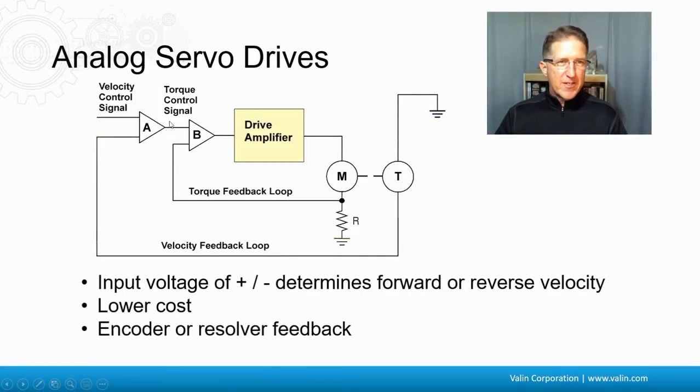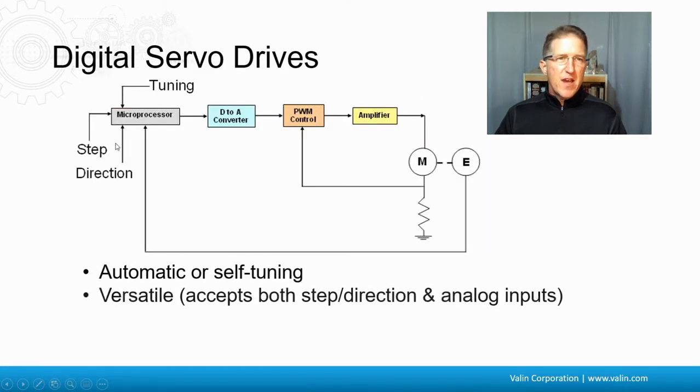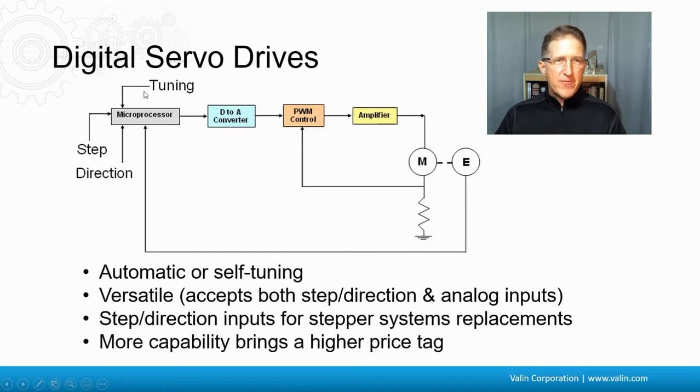Another couple quick things here. Here's an analog servo drive. These are less expensive and sometimes easier to use, but they've been around for a long, long time. You can see that there's just resistors and, you know, there's capacitors and stuff in there just in order to control the signals. Definitely lower cost, typically. Digital servo drives have to use a microprocessor instead, and then there's a digital to analog converter in order to actually control the current. They come with automatic or even self-tuning servo loop systems.